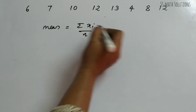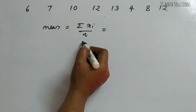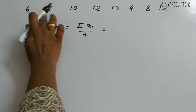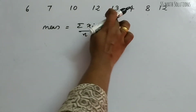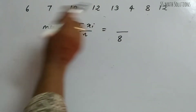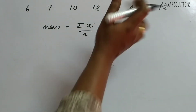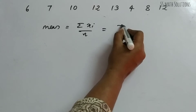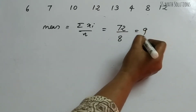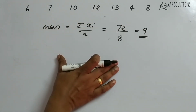Mean is summation xi divided by n — the sum of observations divided by the number of observations. The number of observations here is 8. After adding all the numbers we get 72. So the mean is 72 divided by 8, which gives us 9 as the mean.